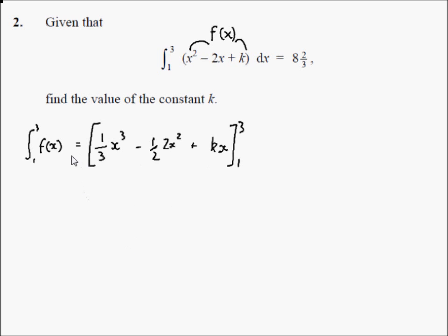Now we just have to substitute in f of 3 and subtract from that f of 1, and the remaining equation, because it still has k in it, still has an unknown, should be equal to 8 and 2 thirds, and then we can rearrange to find k. So let's do that.